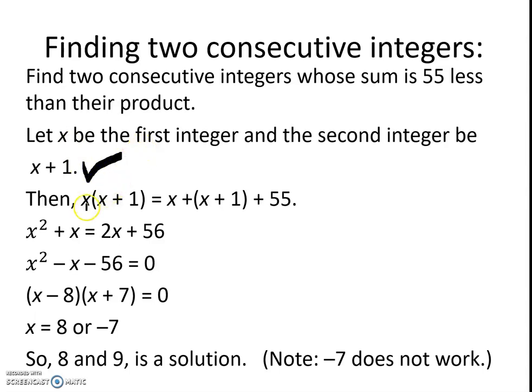Then we know x times x plus 1 equals x plus x plus 1 plus 55. Continuing to simplify, we take x times x and get x squared, and x times 1 and get x. Combining our two x's here, we get 2x, and 55 plus 1 is 56. Subtracting the 2x to the other side, we get a negative x, and subtracting the 56 to the other side, we get a negative 56.